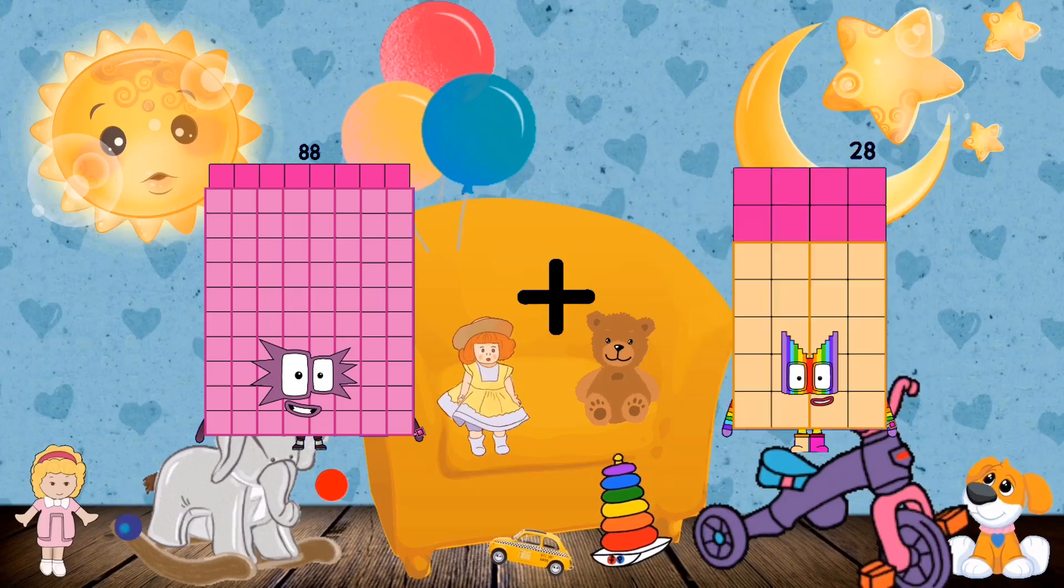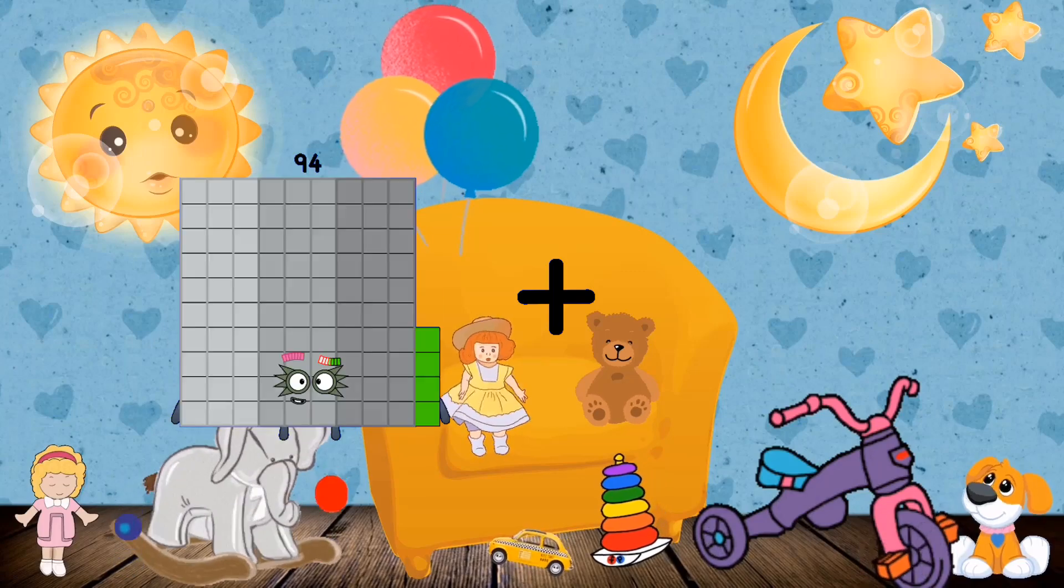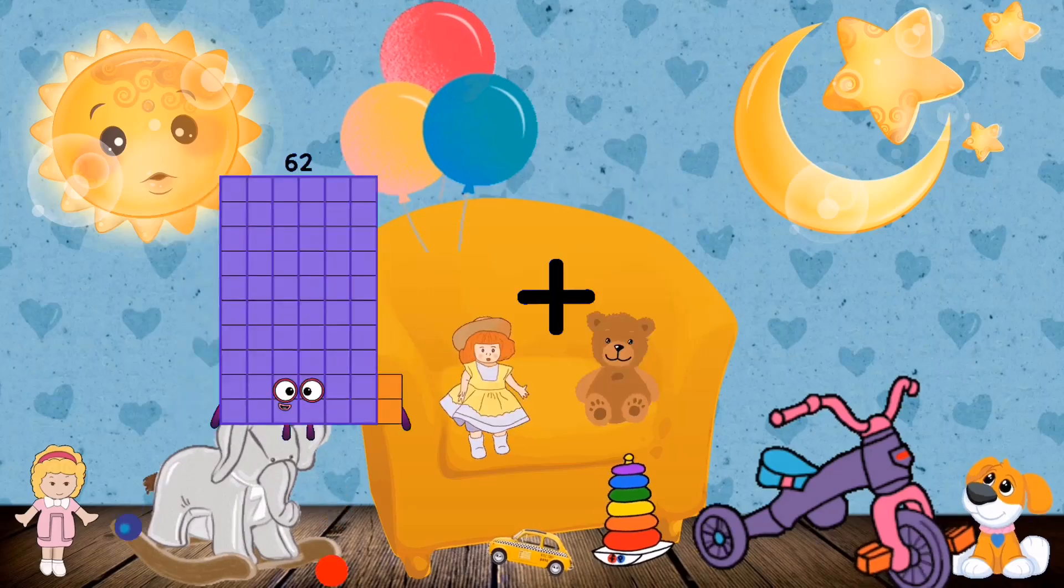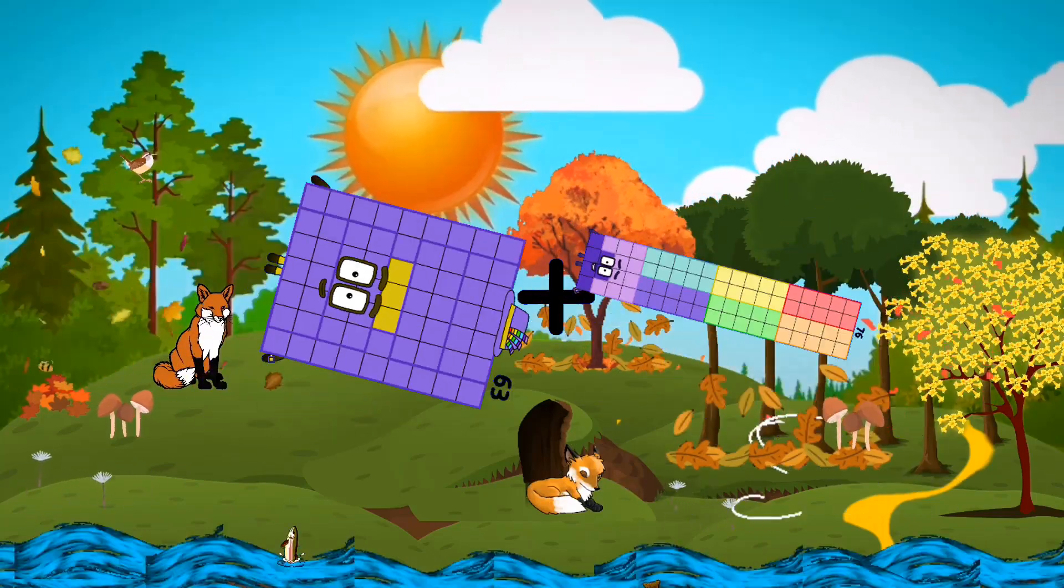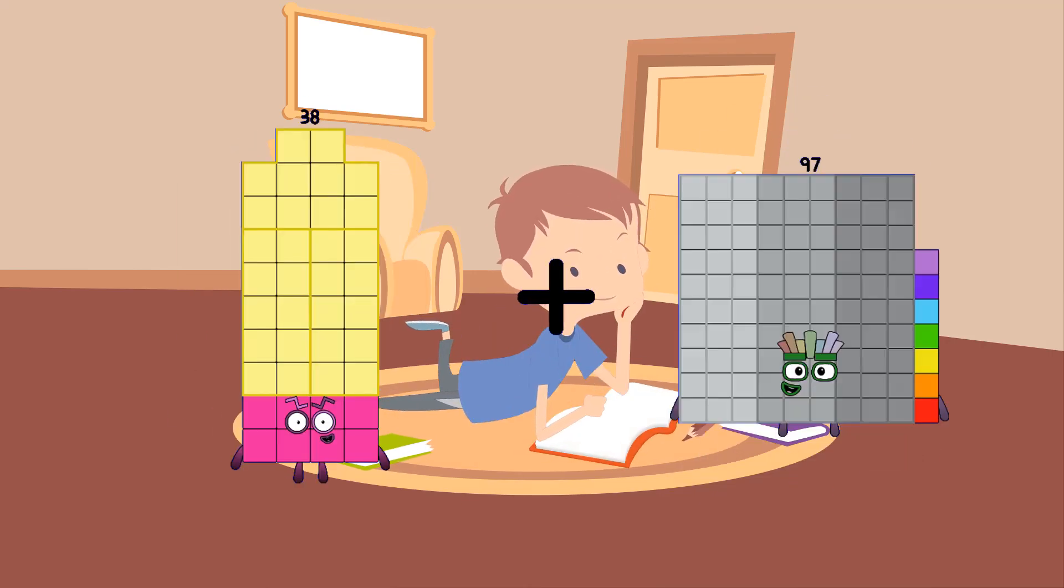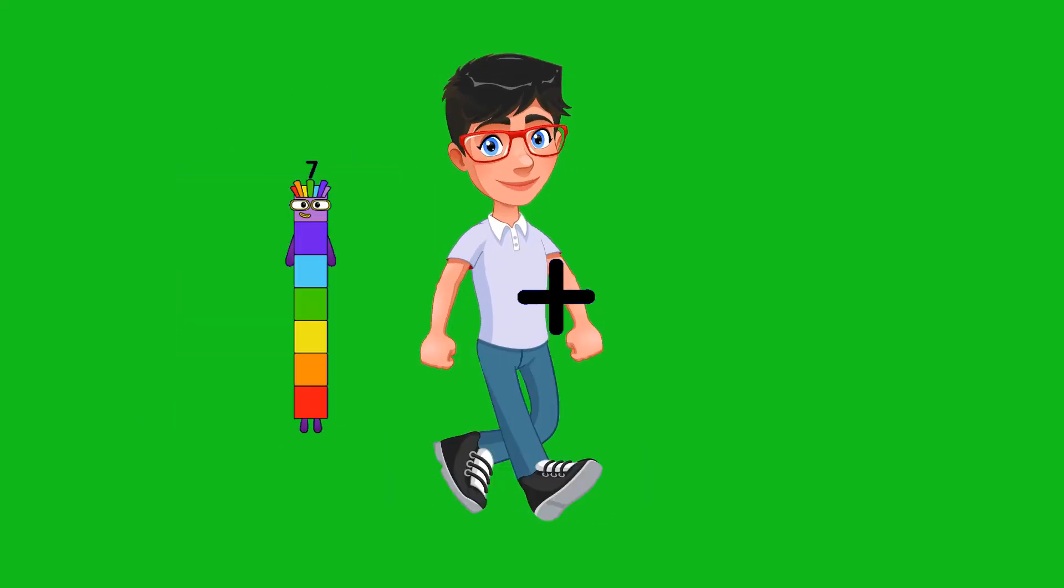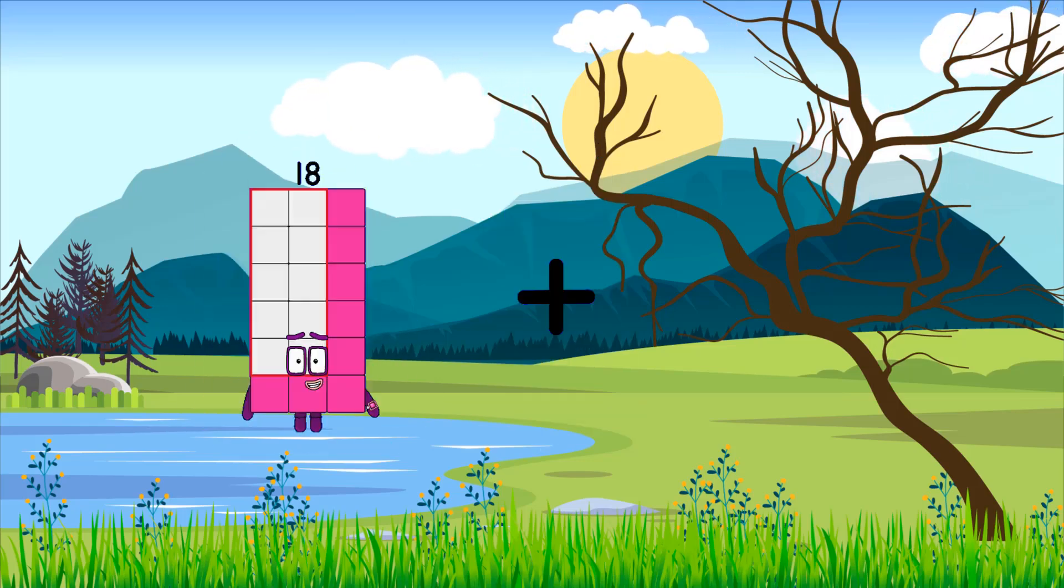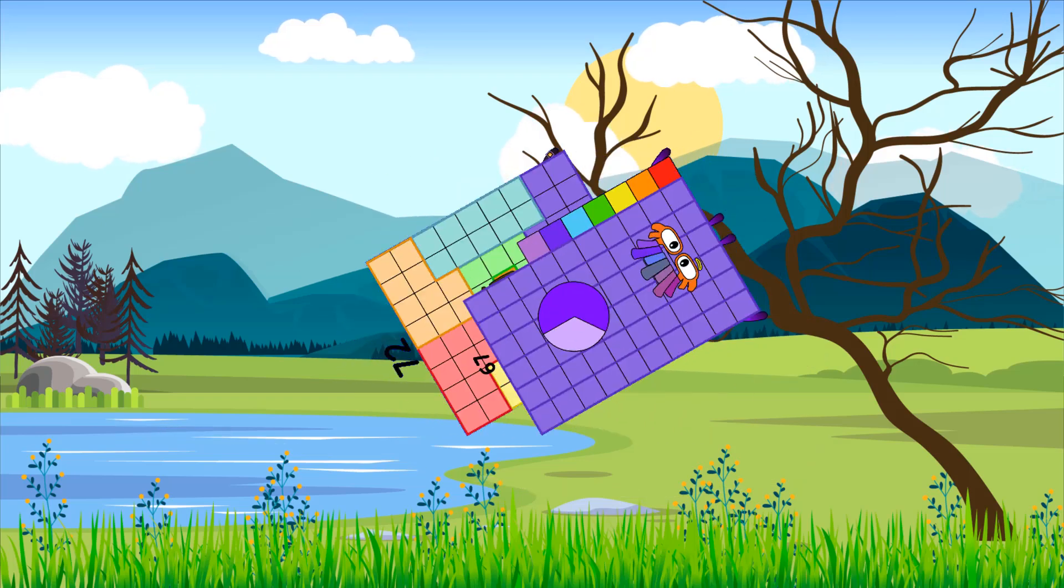88 plus 46 equals 134. 4 plus 86 equals 90. 63 plus 76 equals 139. 38 plus 17 equals 55. 7 plus 21 equals 28. 72 plus 67 equals 139.